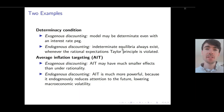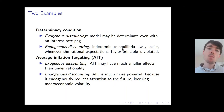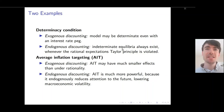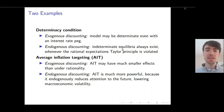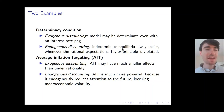Let me give you a couple of examples. The first is the determinacy condition. One of the main predictions of the exogenous discounting model is that the model can be determinate even with an interest rate peg. But under endogenous discounting, I show that indeterminate equilibria always exist whenever the rational expectations Taylor principle is violated.